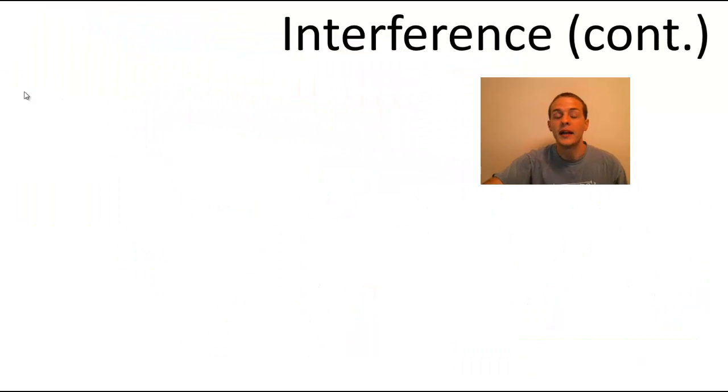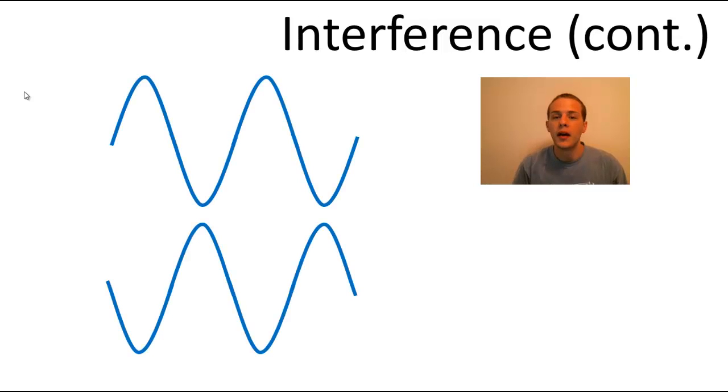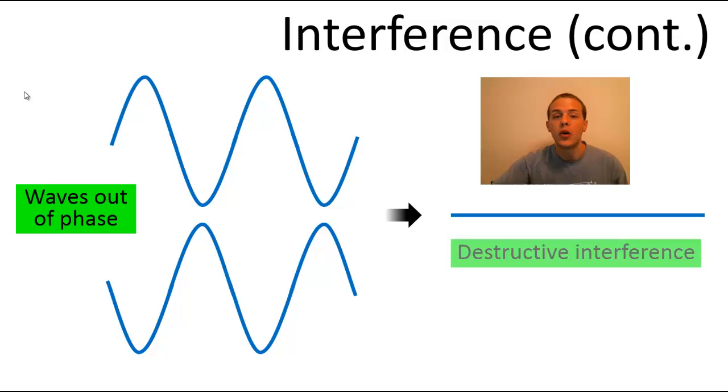On the flip side, if we have two waves that are coming together and the crest of one of those waves overlaps with the trough of another, these types of waves are considered to be out of phase. When two out of phase waves come together, they're going to actually cancel one another out, and this phenomenon is called destructive interference. So we've talked about interference, now let's talk a little bit about diffraction.